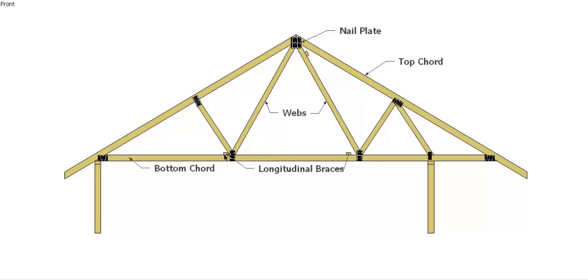We then have longitudinal braces which run the length of the roof but at 90 degrees to the truss, which tie the bottom chord of all the trusses together and braces things up.